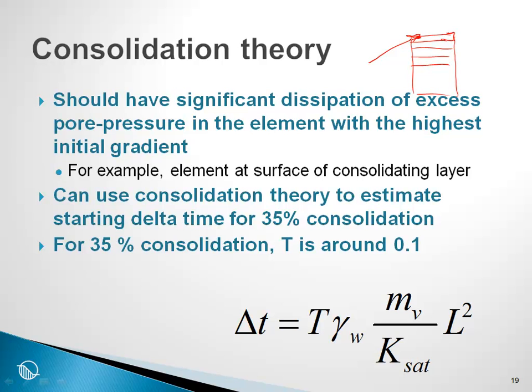If the delta t is too small and there is virtually no change in the first element on the surface, then we can get some numerical noise and some irregularities in the pore pressure distribution. We can use consolidation theory to take a look at what might be an appropriate delta t.